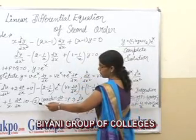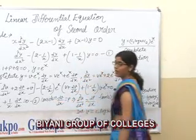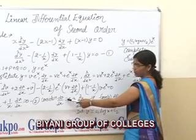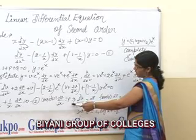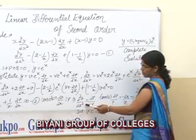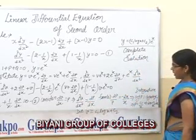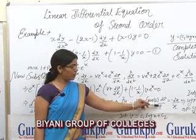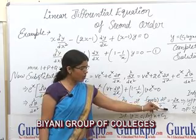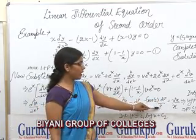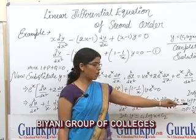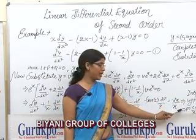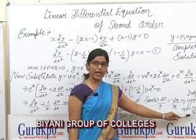Here, we consider dv/dx = p, so d²v/dx² = dp/dx. From the resulting equation, we can write dp/p = dx/x. After integration, we get log p = −log x + log C₁, which gives p = C₁/x.